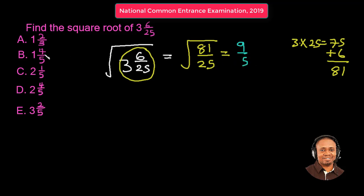Now we can see that the answers are left as improper fractions, so we need to convert it back to mixed fraction. So 5 into 9, how many times? 1. Exactly.